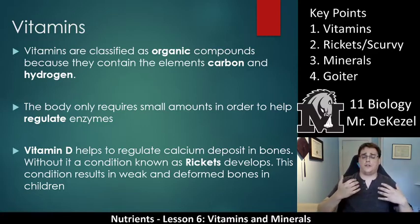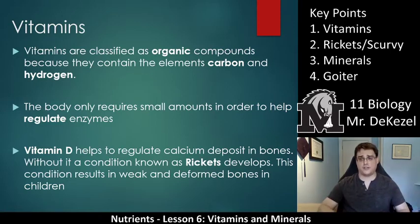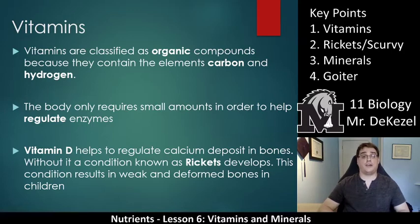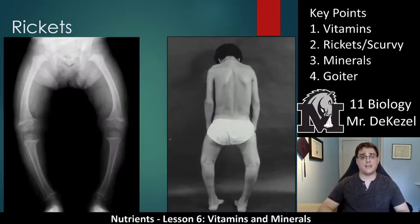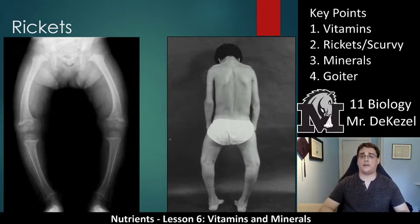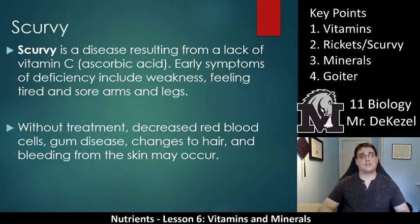So vitamins do very interesting and important functions like that. You'll notice I've talked about what vitamins are and about rickets, which is part of key point two. Rickets is when you don't have enough vitamin D — it results in bones that are bent and is very uncomfortable. This is because the bones are essentially soft and can't handle the weight of a body very well. Scurvy is another disease; it results from a lack of vitamin C.